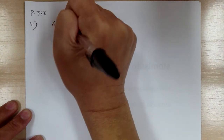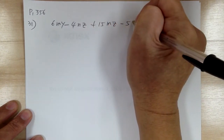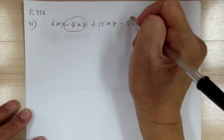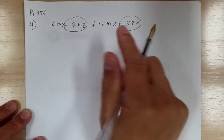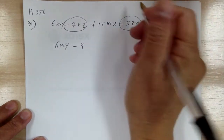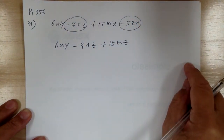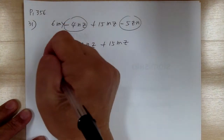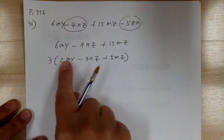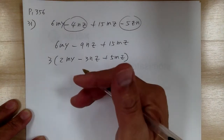Number 31. You have 6my minus 4nz plus 15mz minus 5zn. First combine like terms — nz and zn are the same thing. So you get 6my minus 9nz plus 15mz. Then step 1, common factor — factor out 3. So you get 3 times 2my minus 3nz plus 5mz. You cannot do any more because there's no square. Go through the checklist: no perfect square, no cube, no master product applies. So this is it.